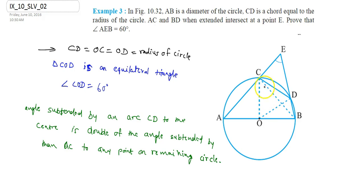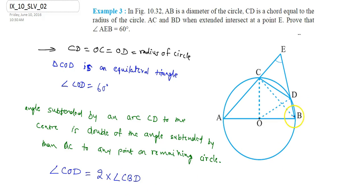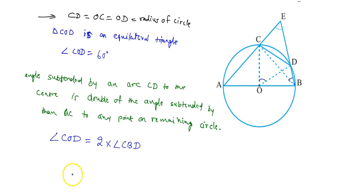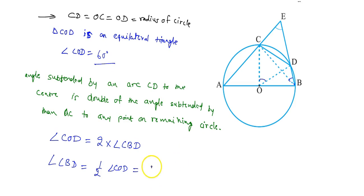The angle subtended at the center by arc CD is 60 degrees. So angle COD equals 2 times angle CBD. This means angle CBD equals one-half of angle COD.